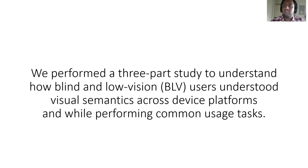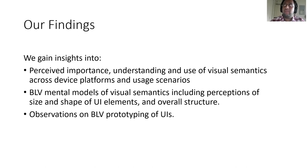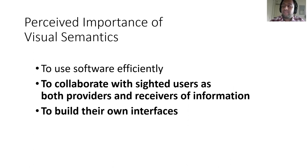Performing these studies gave us a lot of insight into why people who are blind or have low vision feel visual semantics are important and into their underlying mental models about visual semantics. Our participants felt that visual semantics were important to use software efficiently, to collaborate with sighted users as both providers and receivers of information, and to build their own interfaces.